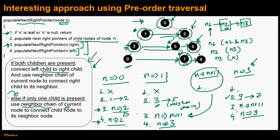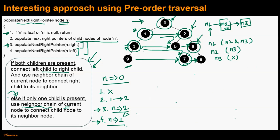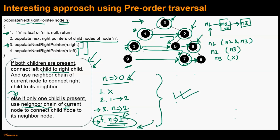In this way we have completed the recursive call sequence for current node 3. After execution for node 3, control returns to node 1, completing all four steps for node 1. Then control returns to node 0, completing all four steps there as well, which essentially completes the execution of this algorithm. After execution, all the next right pointers are populated correctly.